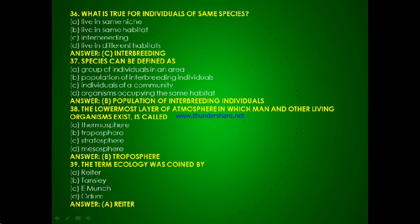Question 34: What is true for individuals of the same species — live in same niche, live in same habitat, interbreeding or live in different habitats? The answer is C, interbreeding. Question 35: Species can be defined as — a group of individuals in an area, a population of interbreeding individuals, individuals of a community, or organisms occupying the same habitat? The answer is B, population of interbreeding individuals.